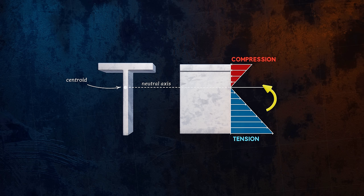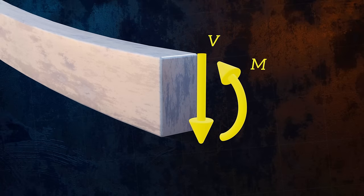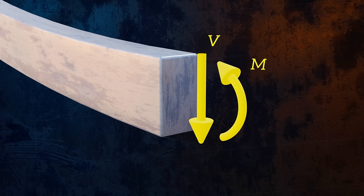Most of the time we won't have pure bending, as there will also be a shear force acting on the beam cross section. It turns out that the presence of a shear force doesn't normally significantly affect the bending stresses, and so we can consider the flexure formula we derived earlier for pure bending to be valid for a more general case of bending.